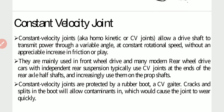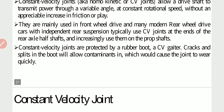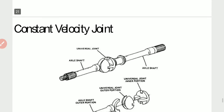Constant velocity joints, also known as CV joints or homokinetic joints, allow a drive shaft to transmit power through a variable angle at constant rotation speed without an appreciable increase in friction or play. They are mainly used in front-wheel drive and many modern rear-wheel drive cars with independent rear suspension. CV joints are also increasingly used on propeller shafts. Constant velocity joints are protected by a rubber boot — a CV gaiter. Cracks and splits in the boot allow contaminants in, which would cause the joint to wear quickly.